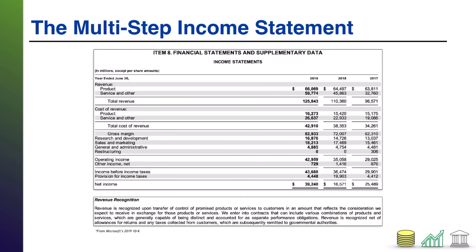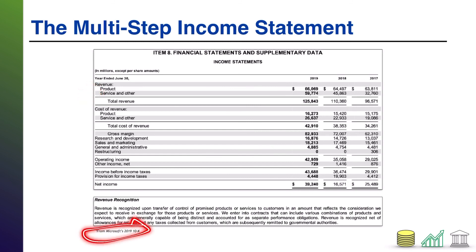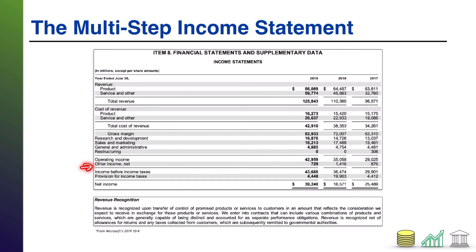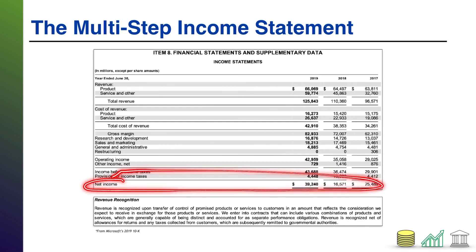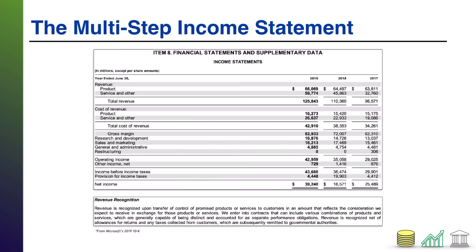Here's an example of a multi-step income statement. This is Microsoft's 2019 10K, by the way. Notice in this example we have revenue up top — specifically it shows product revenue and service revenue, so this company has two different types of revenue. They then take out the cost of revenue, which is another way of referring to cost of goods sold, and that gives them their gross margin. From there, they take out all of their other operating items, which leads to operating income. Then notice they have an other section, which leads to income before taxes, and then they take out income taxes, which ultimately leads to net income. A good example of a multi-step income statement — much more informative in the way it's laid out.